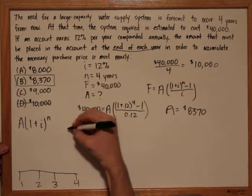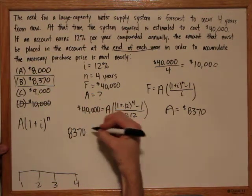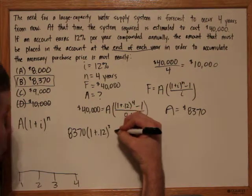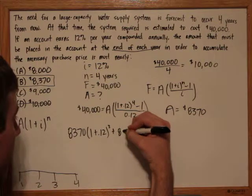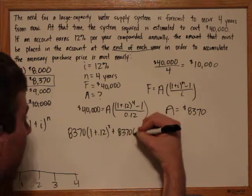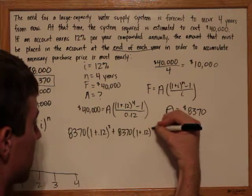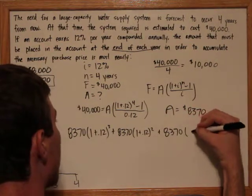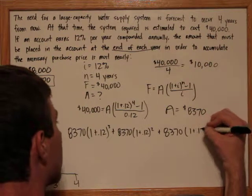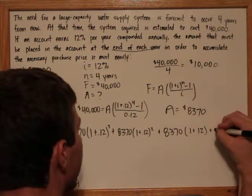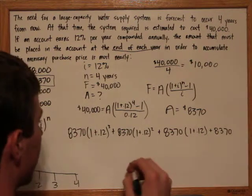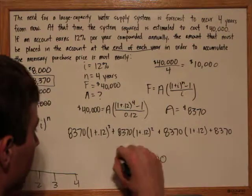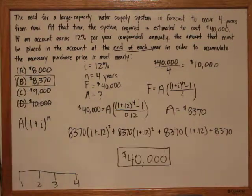So, plugging in what we know, we know the payment is $8,370 times one plus the interest rate, raised to the amount of time. And we do this for each of the payments. This is the second payment, this is the third payment, and this is the fourth payment. Adding these all up together, we get $40,000, which is our original amount, proving that this formula is correct.